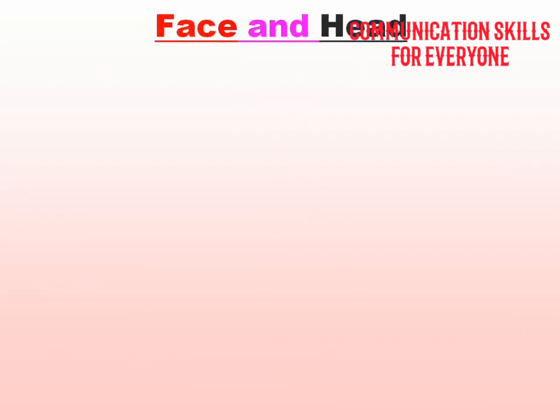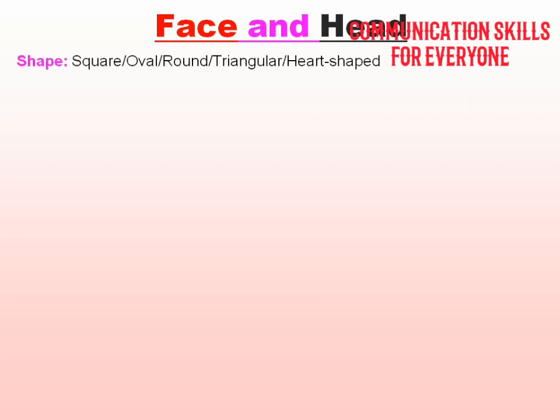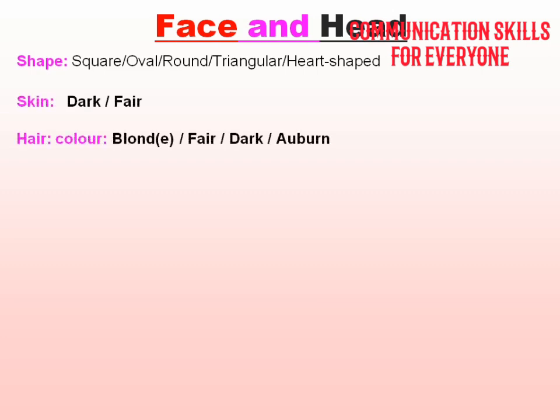Let's look at the face and head. For face shape, you can say oval, round, triangular, or heart-shaped. For skin, you can say dark or fair, even whitish. For hair color, you can say blonde, fair, dark, or brown hair.